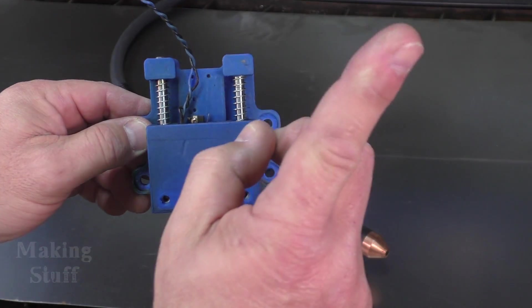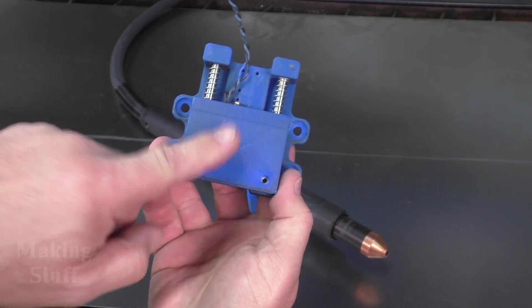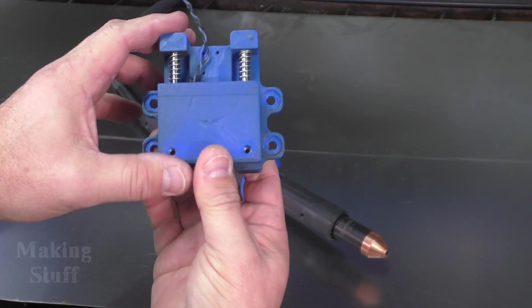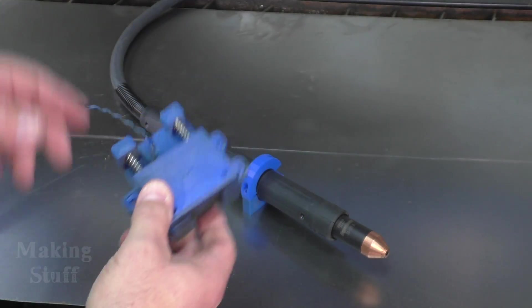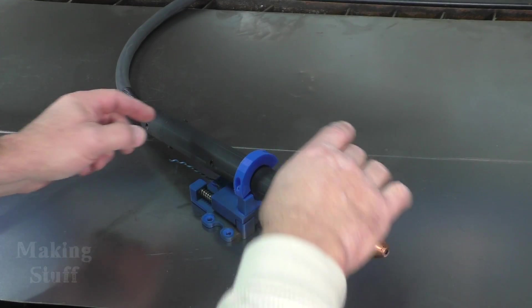This is the floating Z from the old torch. If you remember, I did a video on this. I'll put a link to it right up here if you haven't seen that video. But basically this just floats, the torch mounts to this, and there's a switch here, and then that lets the software know when the torch has touched off.